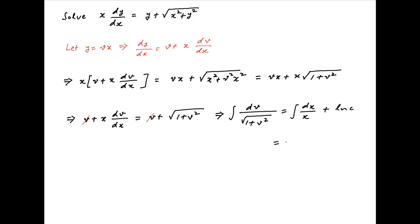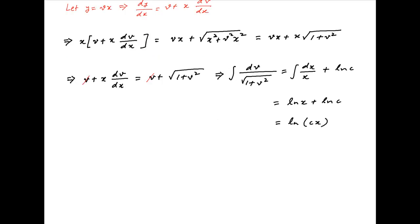Integrate both sides and add the constant of integration, say ln(c) on the right hand side. We get ∫ dv / √(1 + v²) = ln(x) + ln(c) = ln(cx).